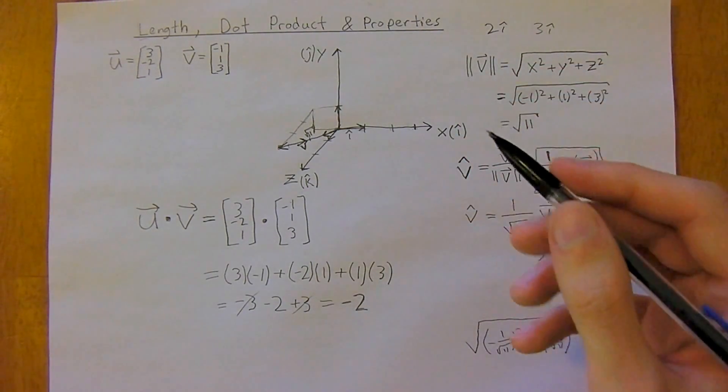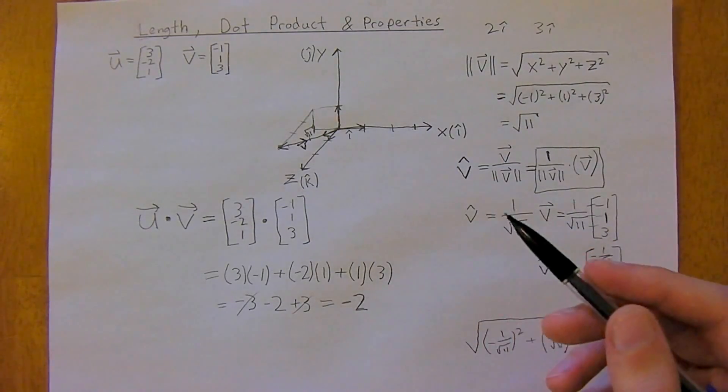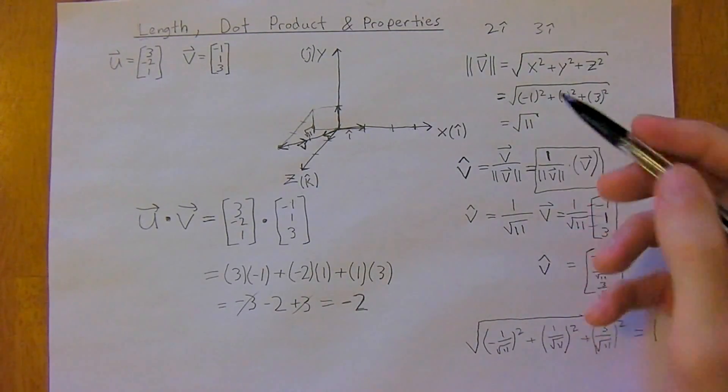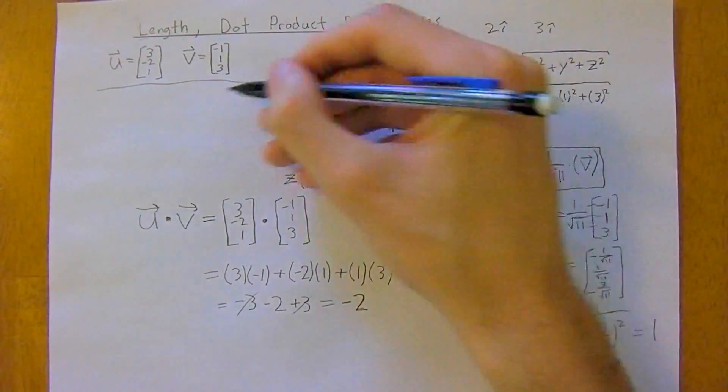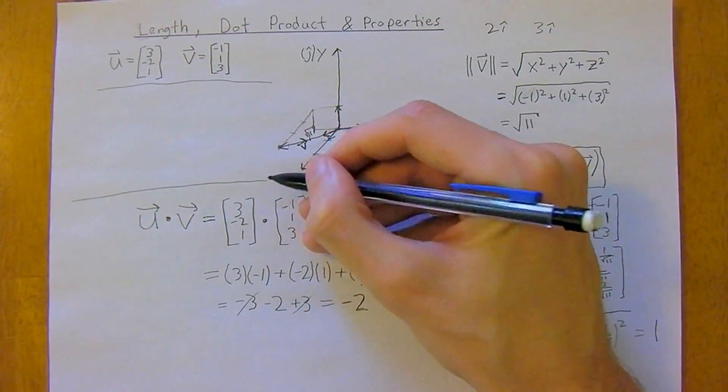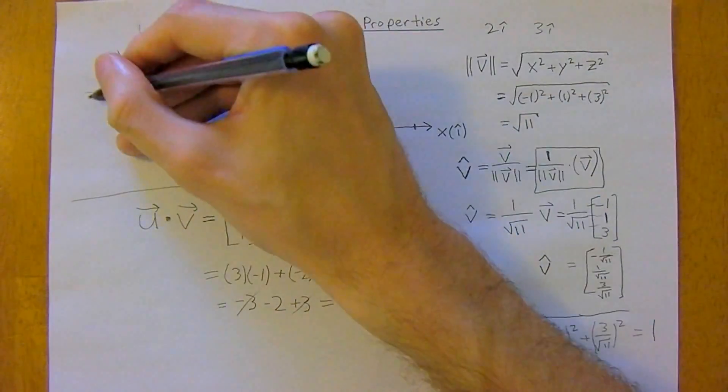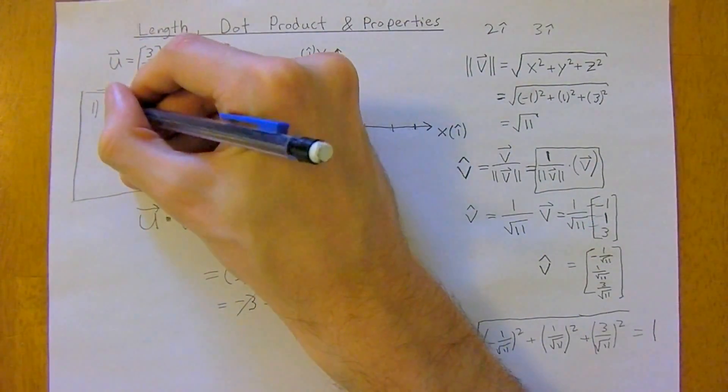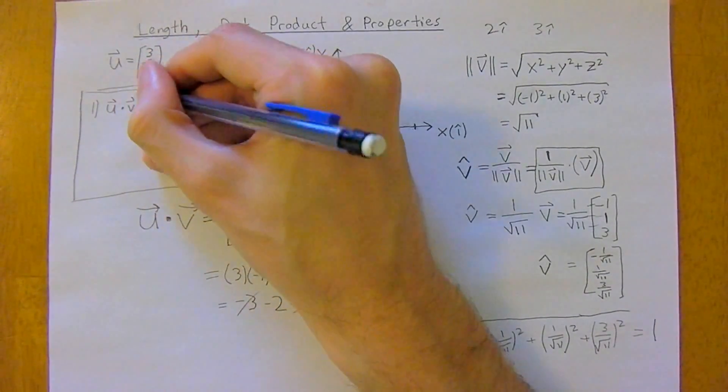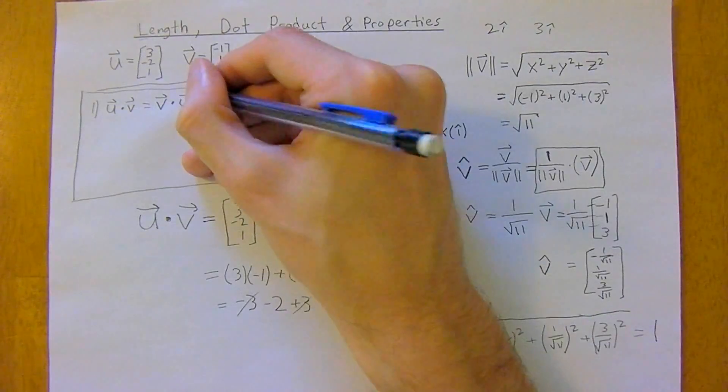So it's pretty straightforward just to do the dot product. I recommend running through a couple examples, but briefly I just want to touch on some important properties. So I'll section off this little area. So first off, u dot v, and these are all vectors, is equal to v dot u.